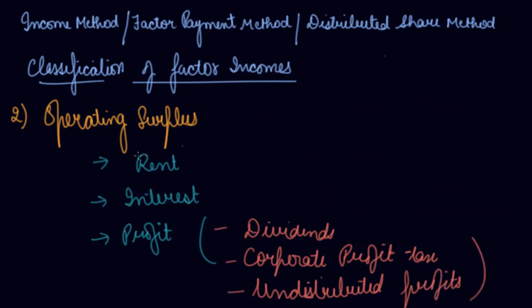The last component is mixed income, which refers to the income of self-employed persons using their own land, labor, capital, and entrepreneurship to produce goods and services. These incomes are a mixture of wages, rent, interest, and profits, which is why they are called mixed incomes.